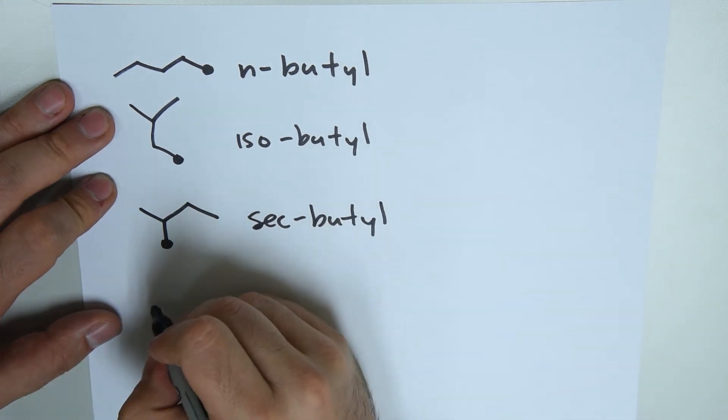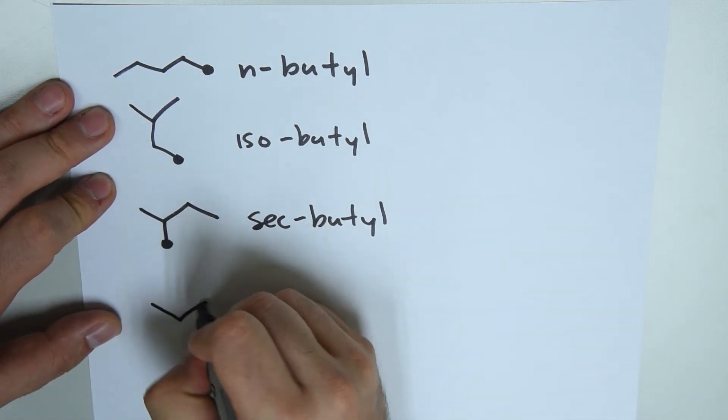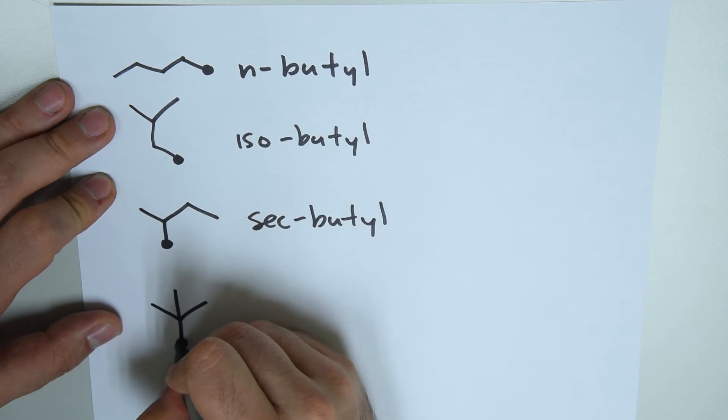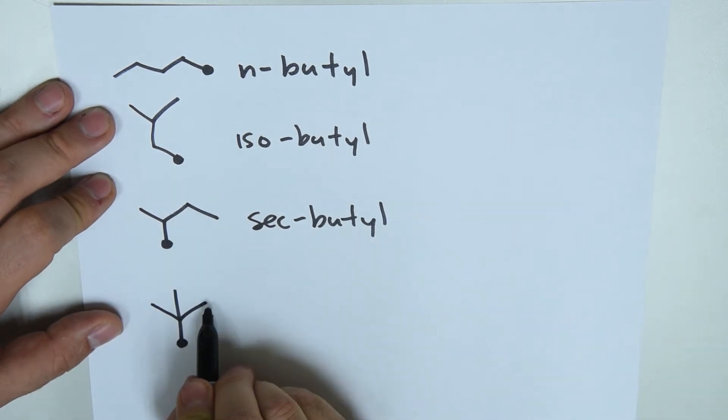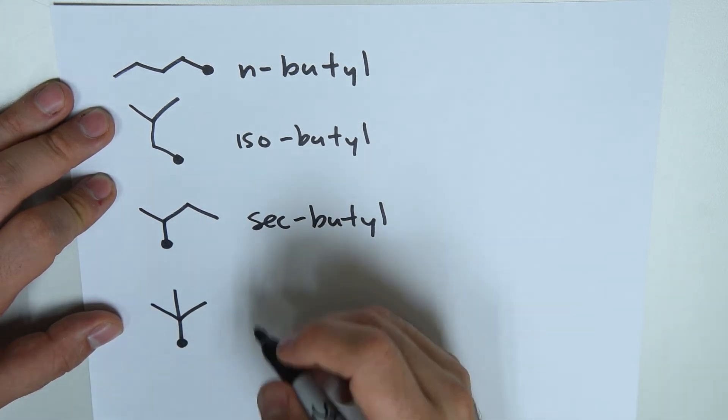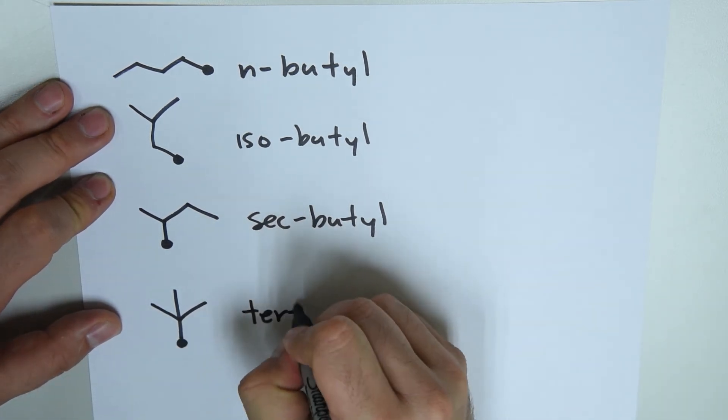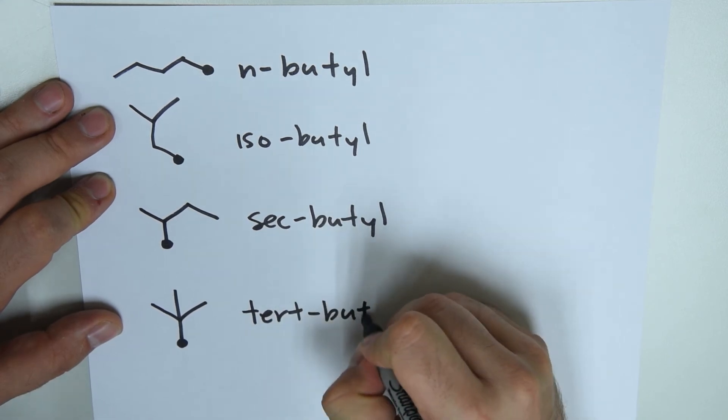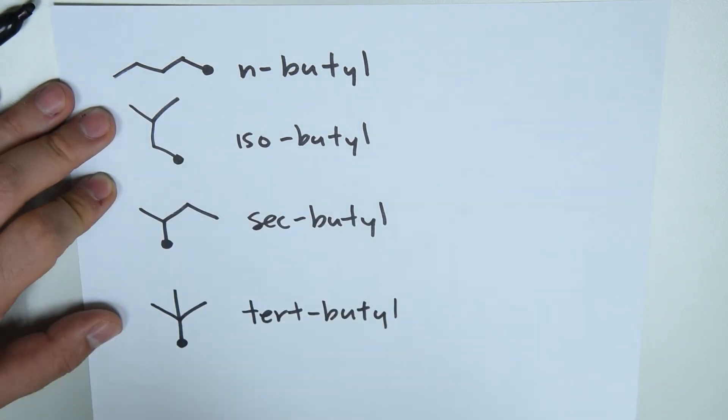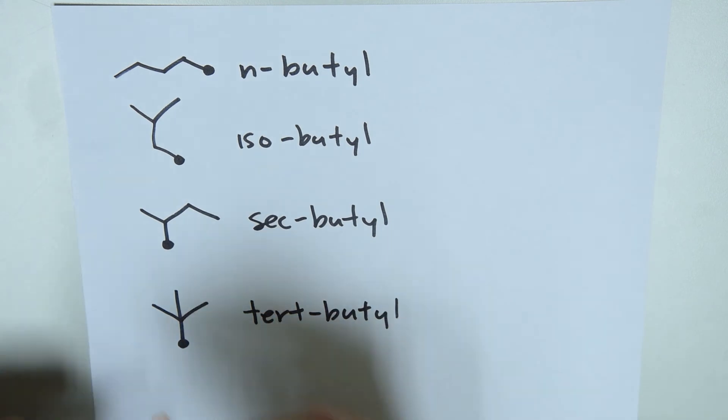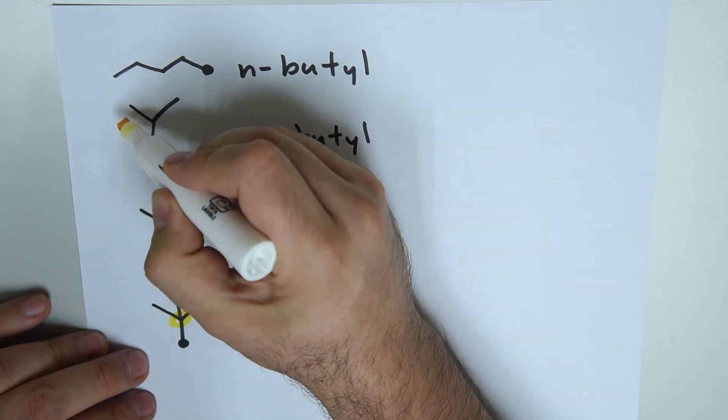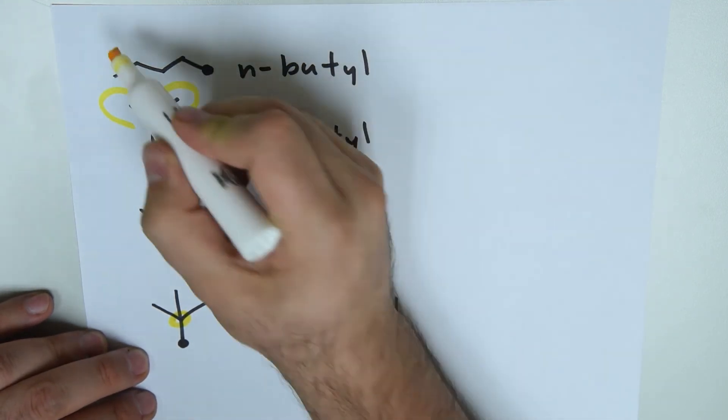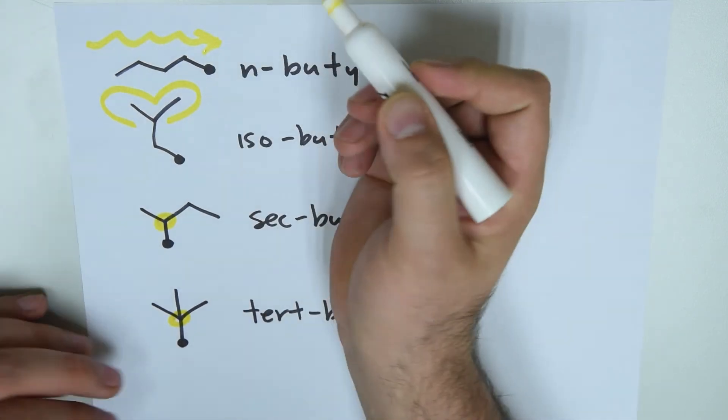If we have another structure, which is kind of like a little chicken foot or a little tree, however you want to look at it, we have one, two, three, four carbons starting in this little chicken foot shape. We get tert-butyl, which is derived from it being attached to the tertiary carbon. Sec-butyl to the secondary carbon, isobutyl ending in this antenna shape, or n-butyl, which is a straight chain.